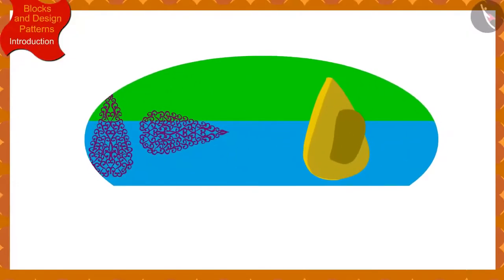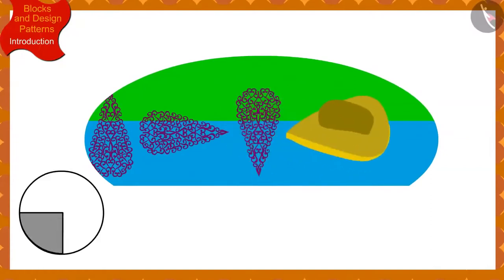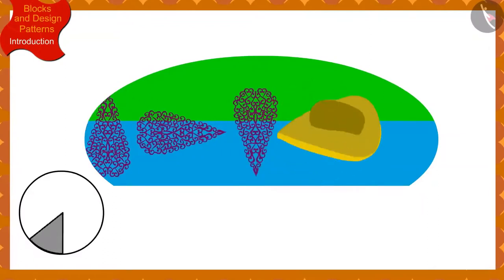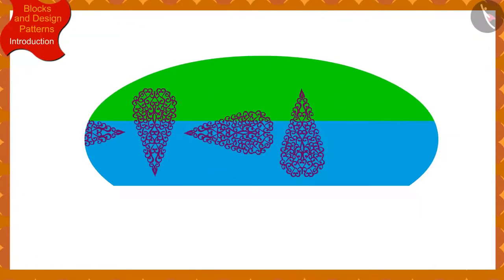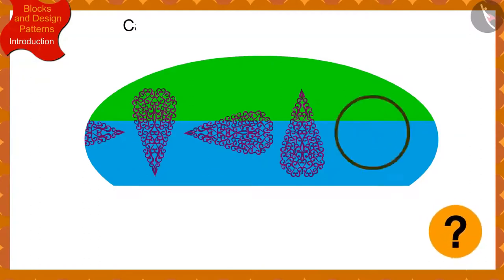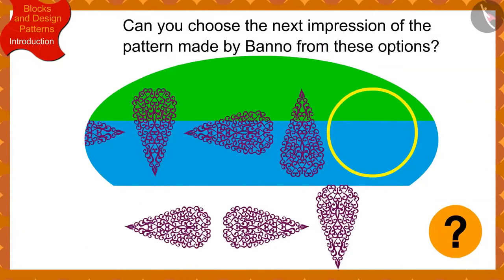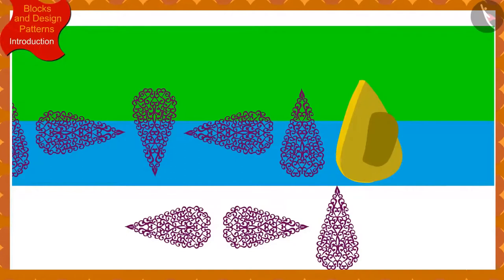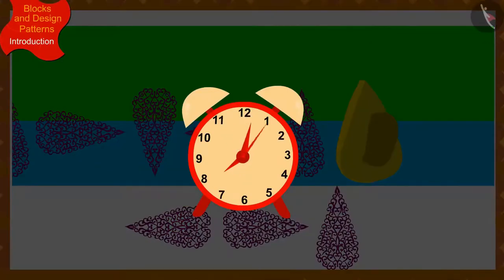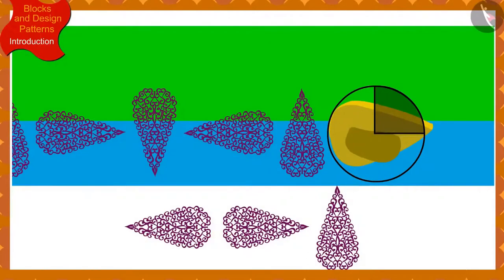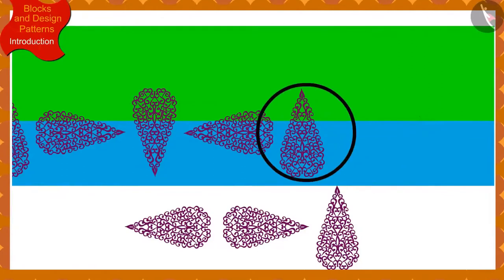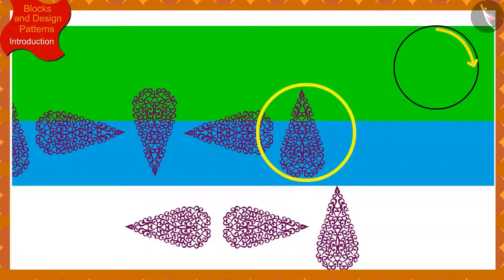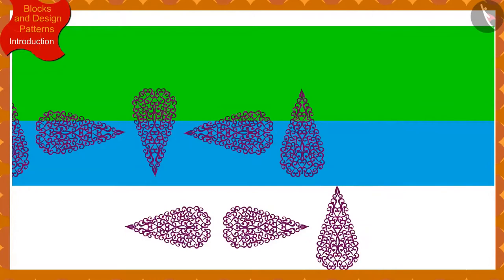Children, if Banno has made this design so far by rotating the block by a quarter in the clockwise direction every time, can you choose the next impression of the pattern from these options? You may stop the video and think of the answer. Because Banno rotates the block a quarter clockwise every time, we have to rotate the current impression by a quarter in the clockwise direction. Among these options, this option will be the next impression.